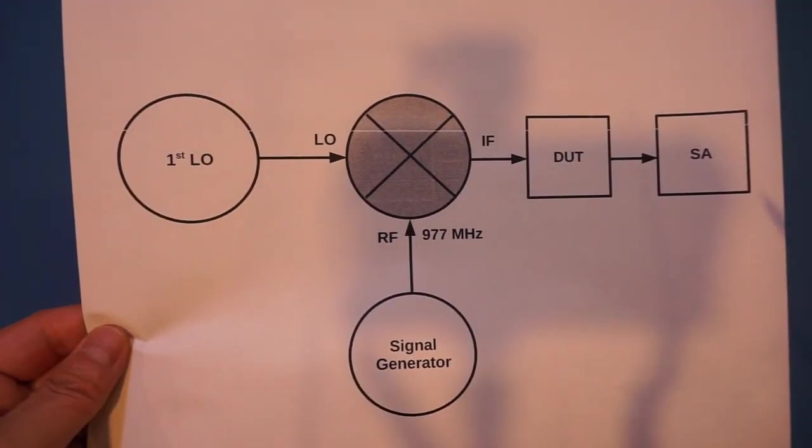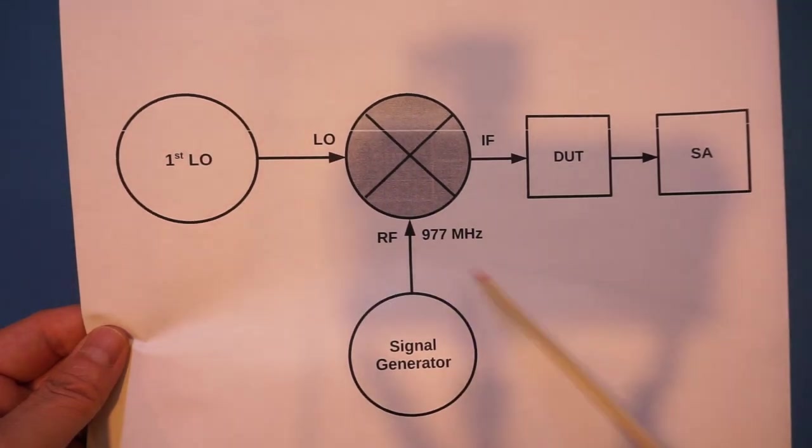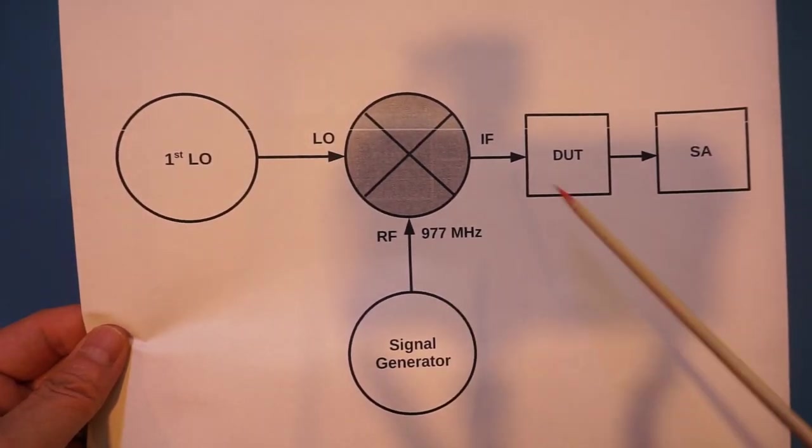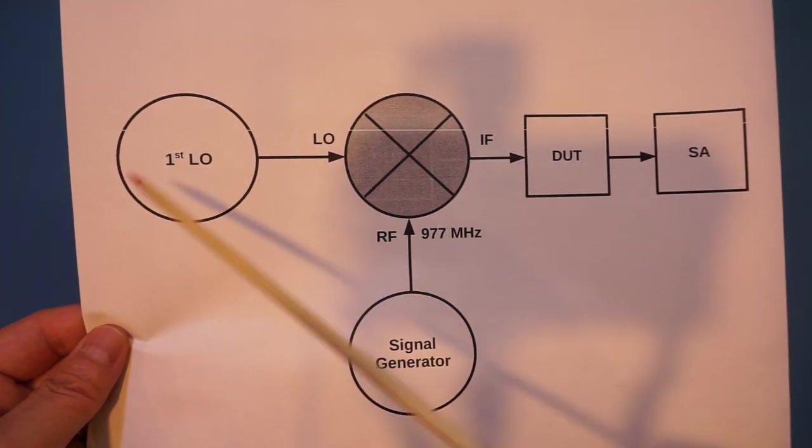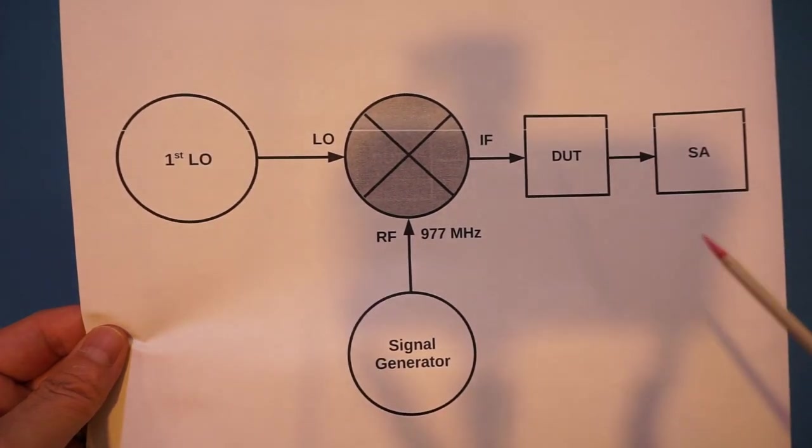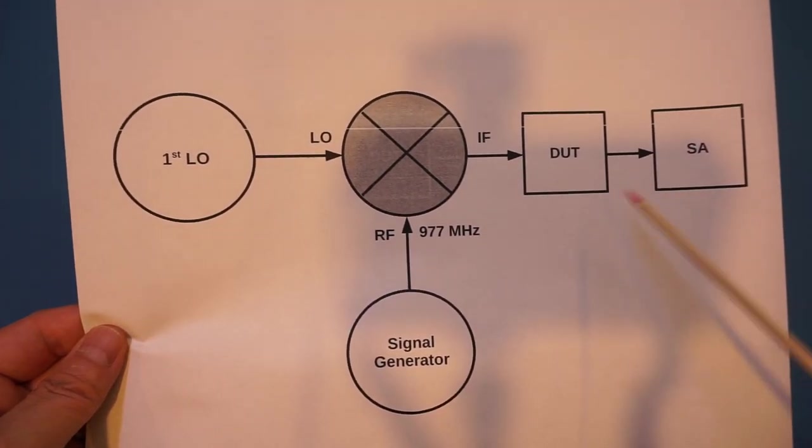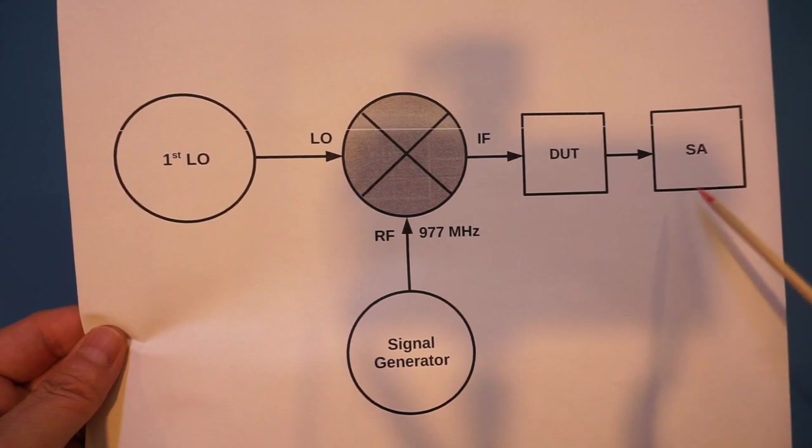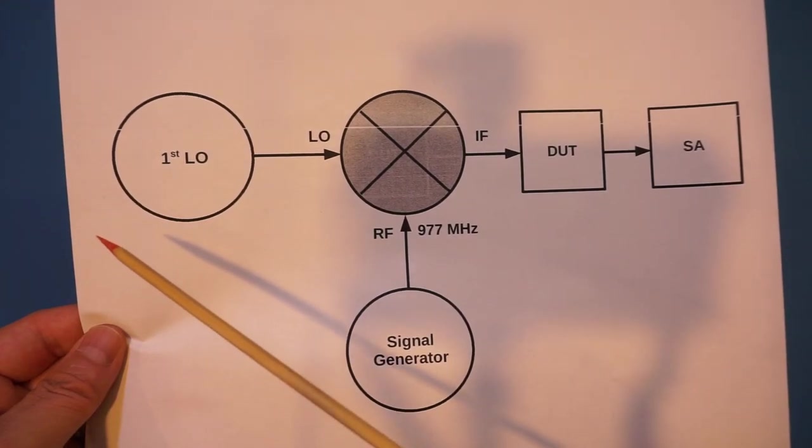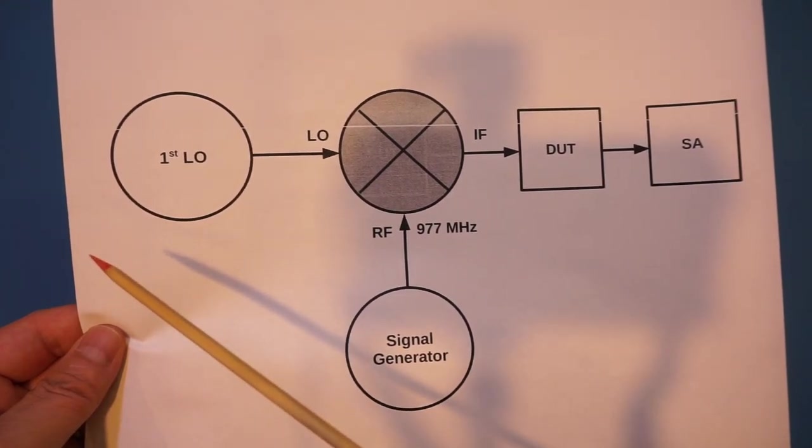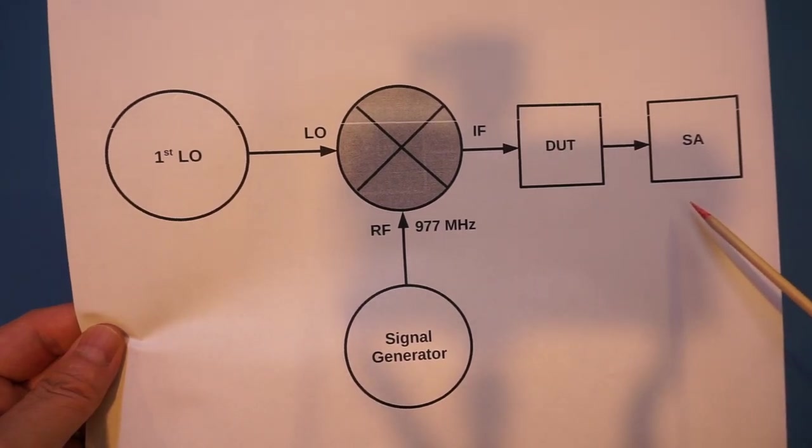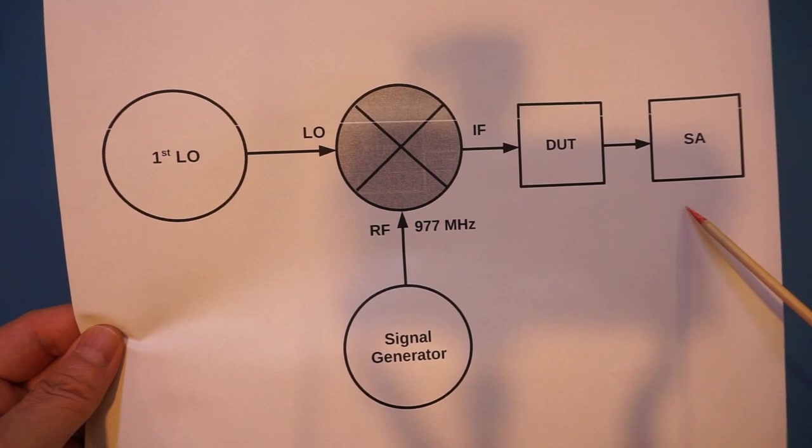As you can see in the diagram I have here, let's first ignore that 977 MHz number. But this is the IF frequency we talked about earlier, and is subtracted from the first LO. So now for simplicity, let's say if the Spectrum Analyzer is sweeping between 0 and 10 MHz. The first LO would be sweeping between 977 and 987 MHz, but at any given moment, what the Spectrum Analyzer sees is the synchronized frequency signal between 0 and 10 MHz.